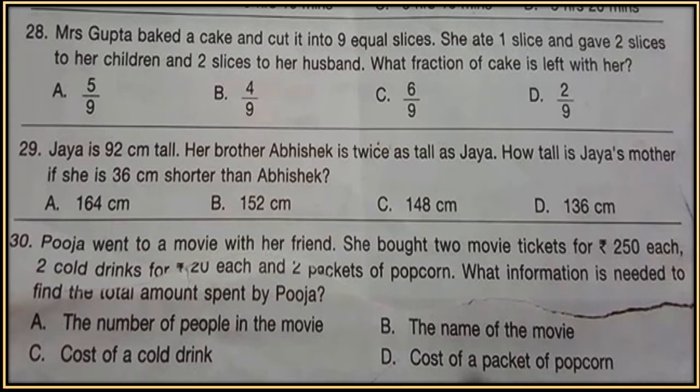Question 28. Mrs. Gupta baked a cake and cut it into 9 equal slices. She ate 1 slice and gave 2 slices to her children and 2 slices to her husband. What fraction of the cake is left with her?